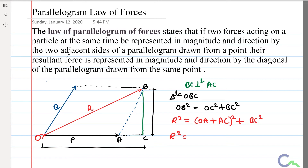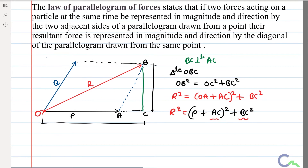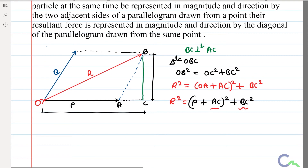So R² = (P + AC)² + BC², where OA is nothing but P. AC and BC are two unknowns, so I have to find those values.